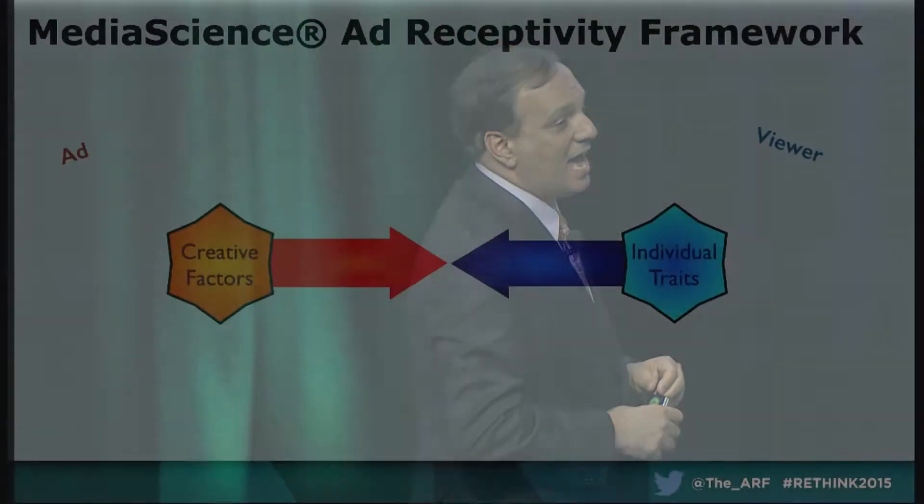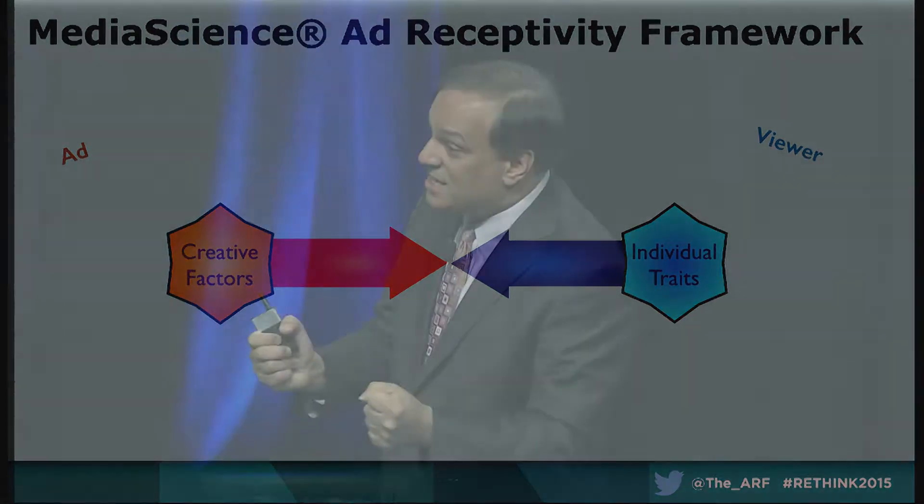We're calling this the ad receptivity framework. A number of years ago, I had the opportunity to speak from this stage, and it was on that occasion that I made a plea to the ARF to engage in what became the NeuroStandards Research Initiatives. Today I say, just as there's a lot of attention to ad viewability, I believe strongly that now we have a need for understanding ad receptivity. The construct of ad receptivity is more important now than ever, because the audience's capacity to attend and engage with our messages will increasingly depend upon their willingness to open their minds as our message is communicated.